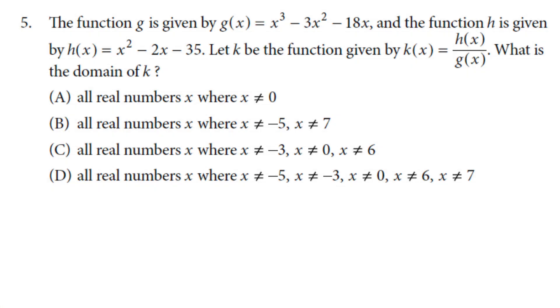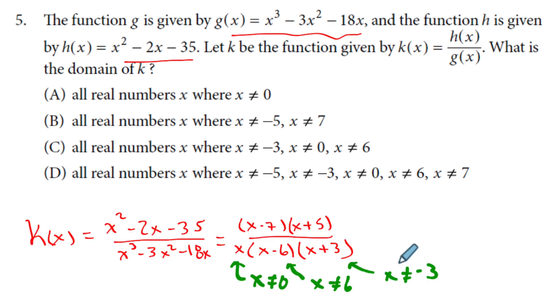So question five right here, we have two functions, and then k is, what, h divided by g, which means this guy's on top, g is on the bottom. Obviously, we're going to do some factoring. Let me write that out. So after we factor it, we look only at the denominator down here. The top, we don't care about because functions can equal zero. You just can't divide by zero. So after you factor it all out, please make sure you put the right function in the right place. You get x cannot equal zero, x cannot equal six, and x cannot equal negative three. That looks like choice C.